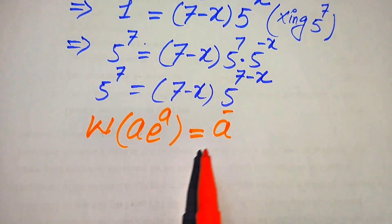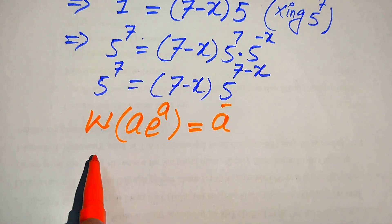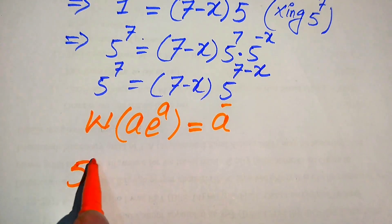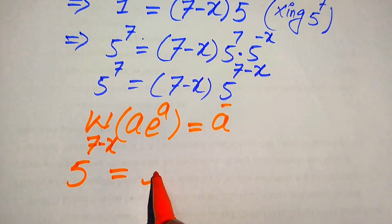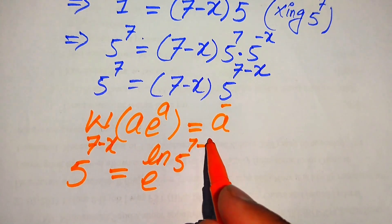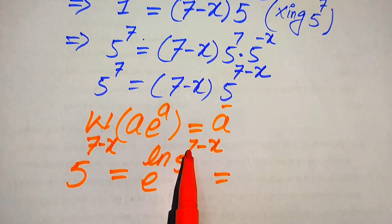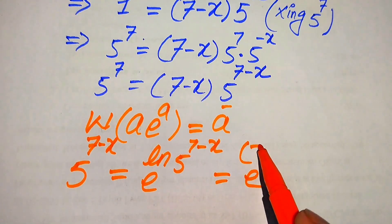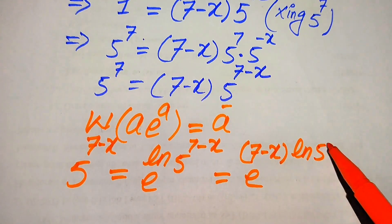We need to focus on the term 5 to the power of 7 minus x. When we apply log and anti-log at the same time, this term is written as e to the power of log of 5 to the power of 7 minus x. We apply the log property and move 7 minus x to the front, so it becomes e to the power of 7 minus x times log of 5.